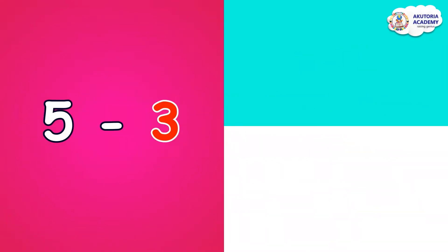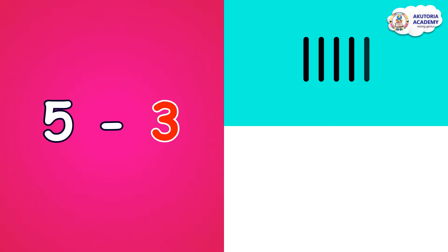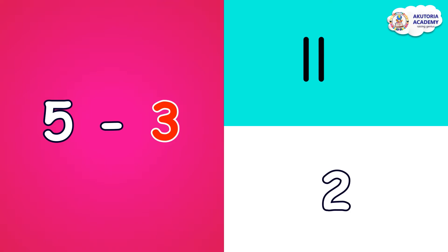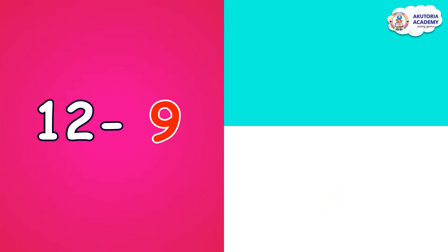Here we have five minus three. We're going to count five sticks: one, two, three, four, and five. And we're going to take away three sticks: one, two, three. Now how many sticks are left? Let's count: one, two. Two sticks are left out of five. Five minus three equals two.